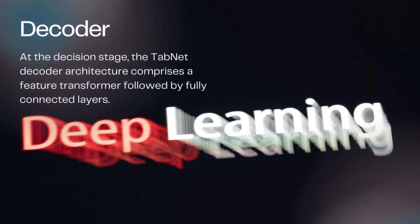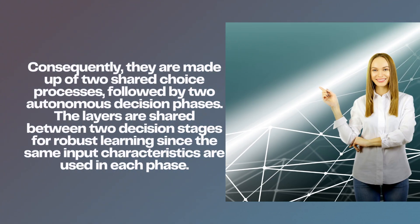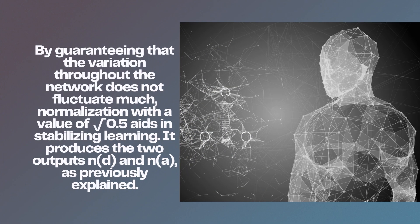Decoder: at the decision stage, the TabNet decoder architecture comprises a feature transformer followed by fully connected layers. The fully connected layer, batch normalization layer, and GLU are the first four successive blocks in the feature transformer. GLU stands for the gated linear unit, which is basically the sigmoid of X multiplied by X — GLU equals sigma(X). Consequently, they are made up of two shared decision processes followed by two autonomous decision phases. The layers are shared between two decision stages for robust learning since the same input characteristics are used in each phase. Normalization with a value of square root 0.5 aids in stabilizing learning by guaranteeing that the variation throughout the network does not fluctuate much. It produces the two outputs N, D and N, A as previously explained.